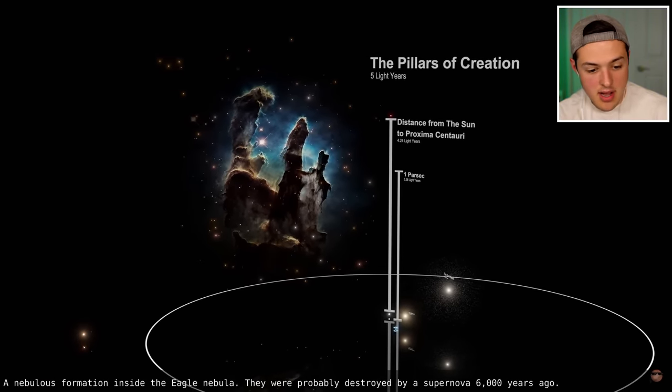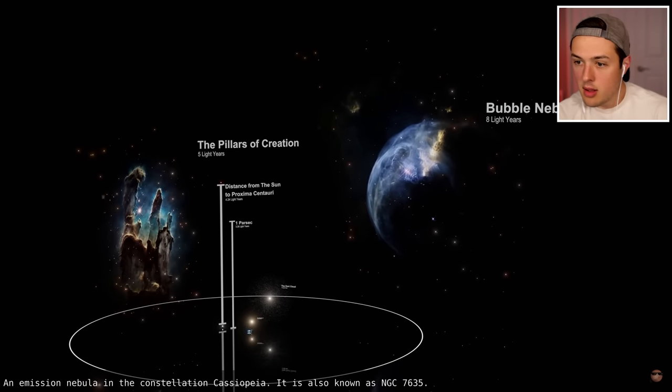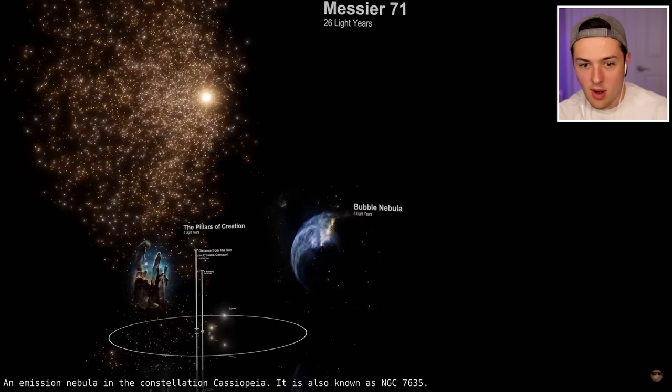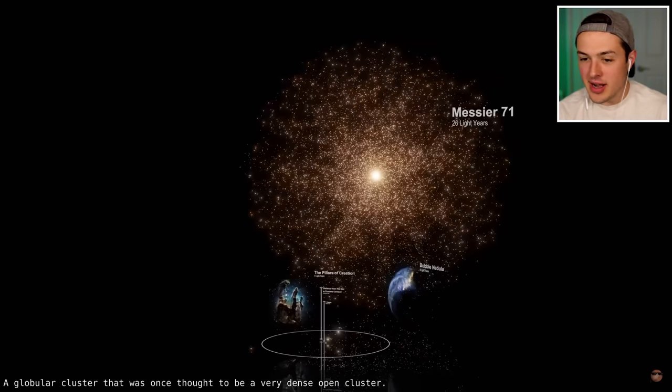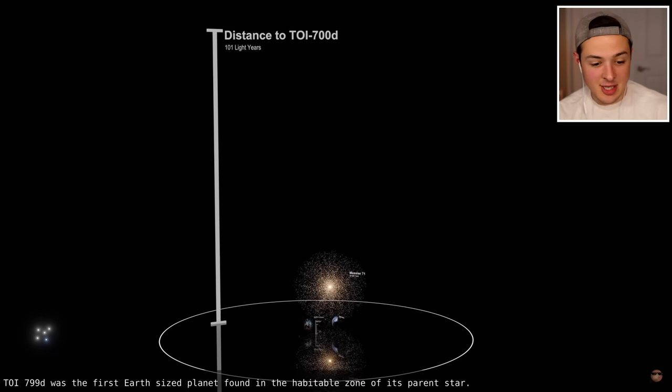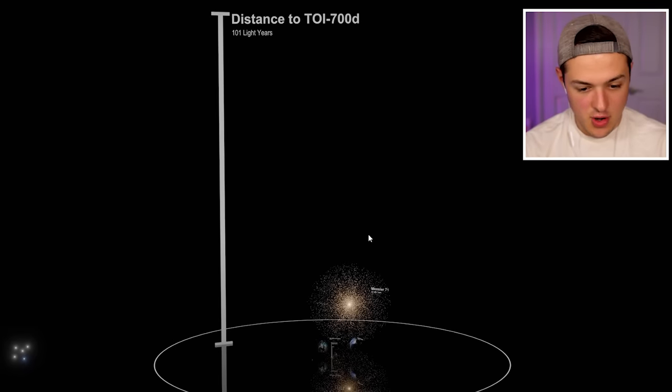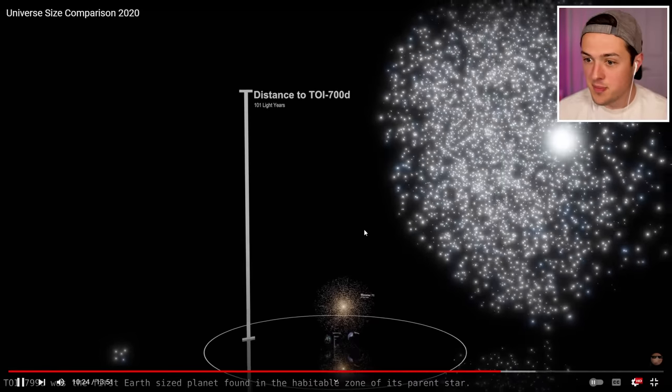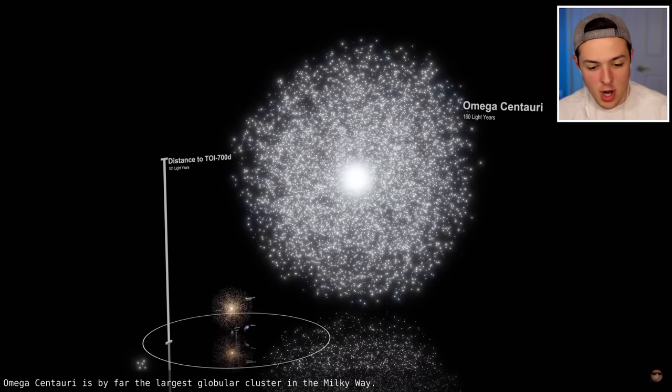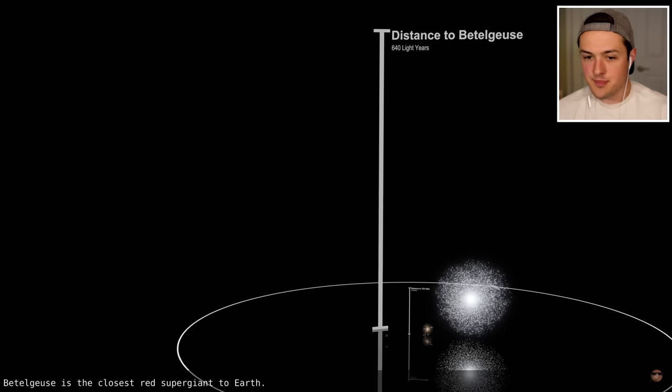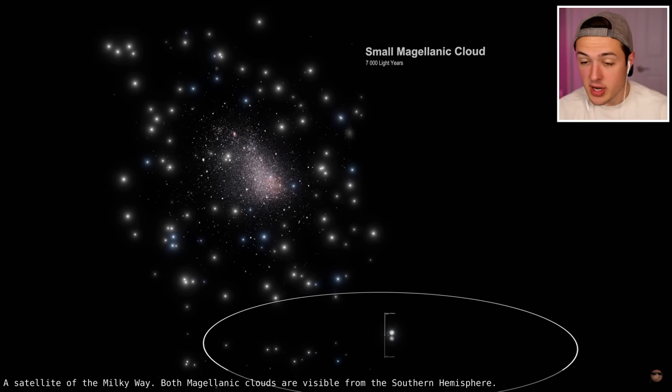What is that? The Pillars of Creation. A nebula formation inside the Eagle Nebula. The Bubble Nebula. Oh my goodness, dude. We're getting too far out. We're getting way too far out right now. What is it? Distance to TOI 700d, the first Earth-sized planet found in the habitable zone of its parent star. That's how far it is? 101 light years away? That's the first time we found a planet that was in the habitable zone of their star, which means that it could have conditions similar to that of Earth, where we have an atmosphere, we have water, we have the best conditions for life to form. It's so far away, bro. Oh, Omega Centauri, the largest globular cluster in the Milky Way. That is the distance to the red supergiant. We're going to stay far away from that.